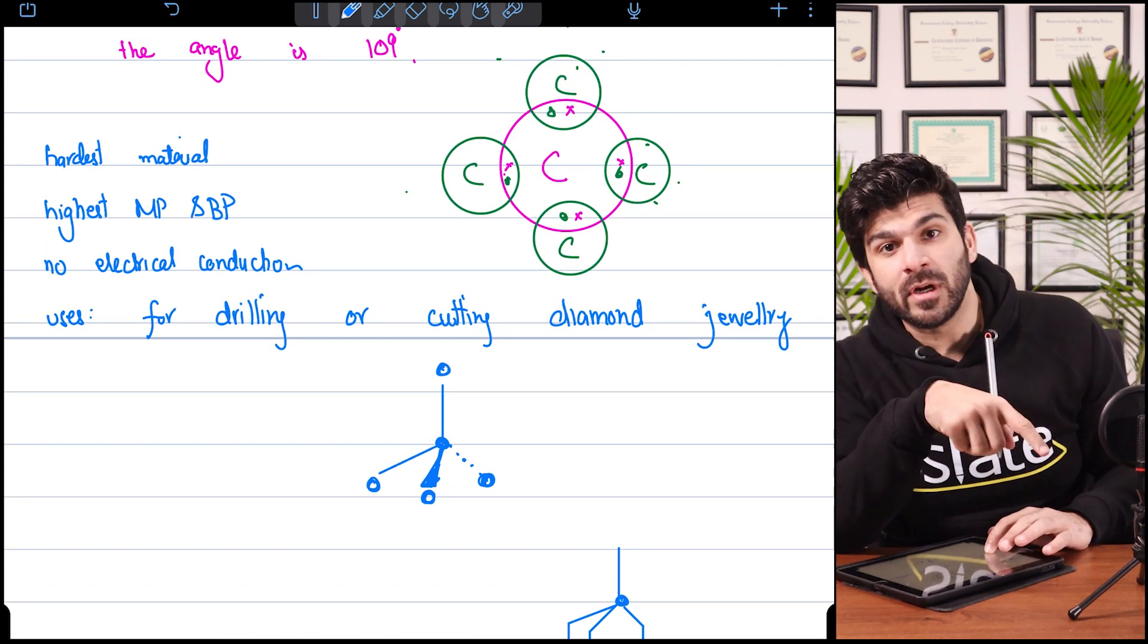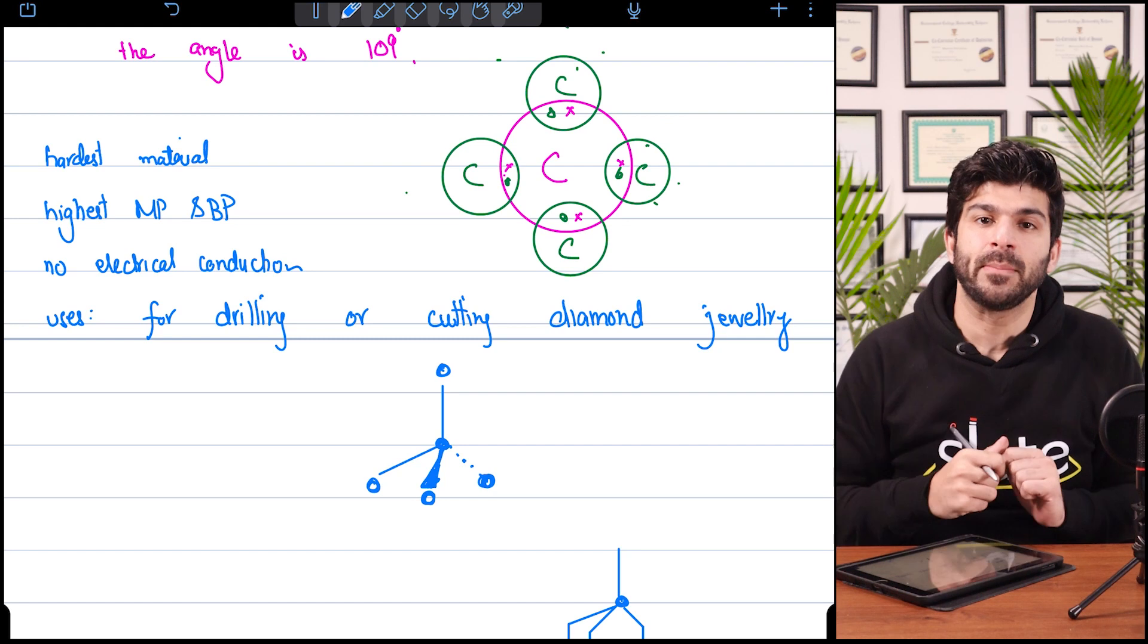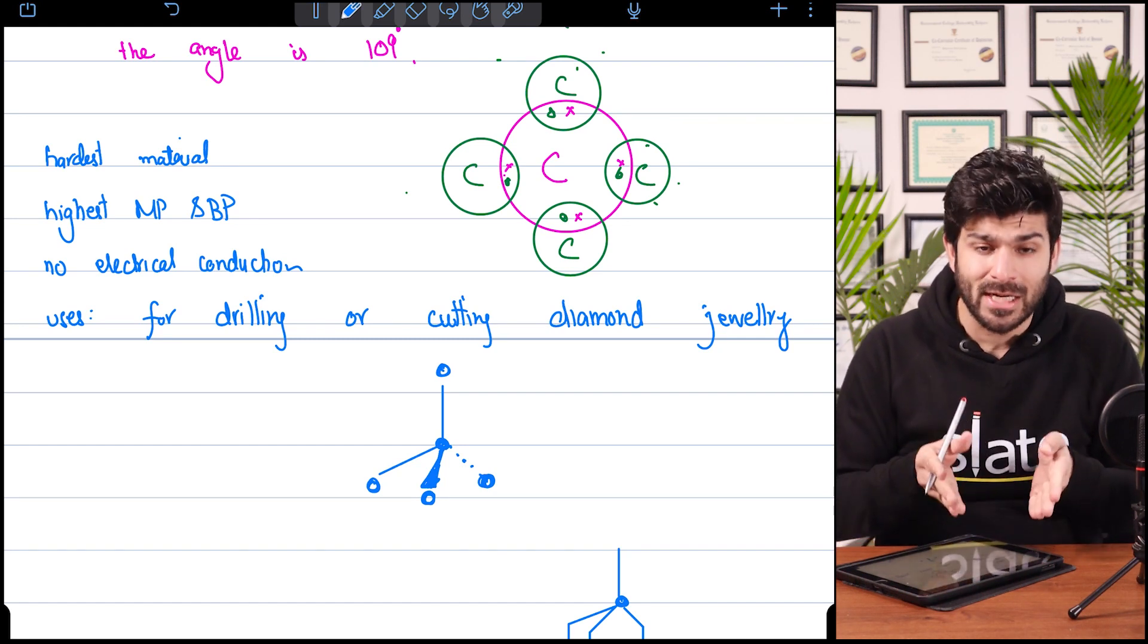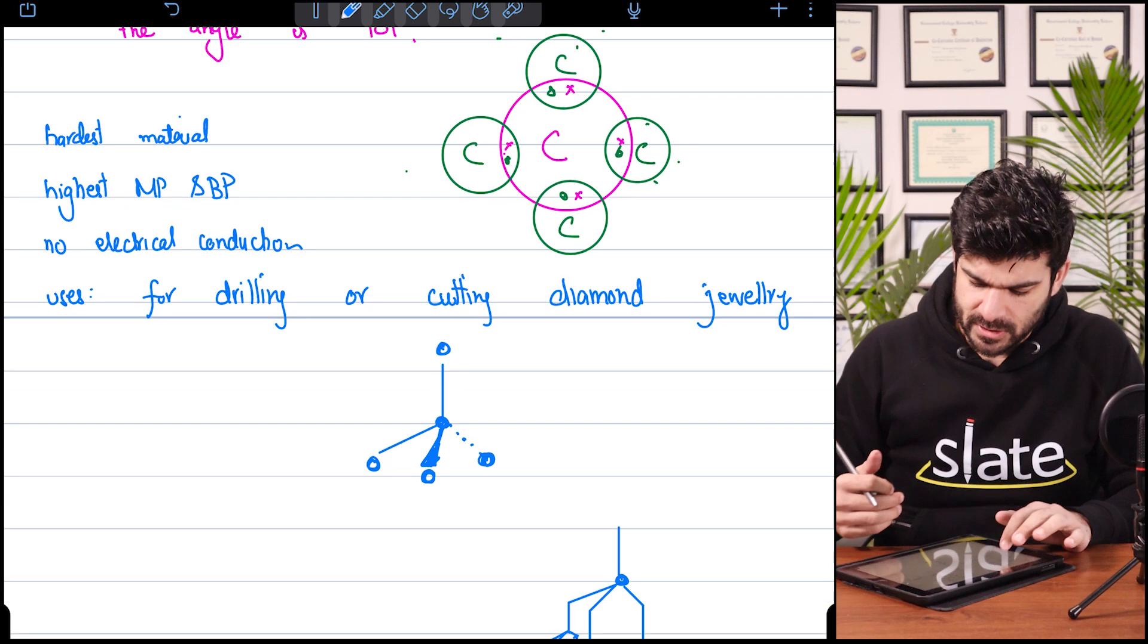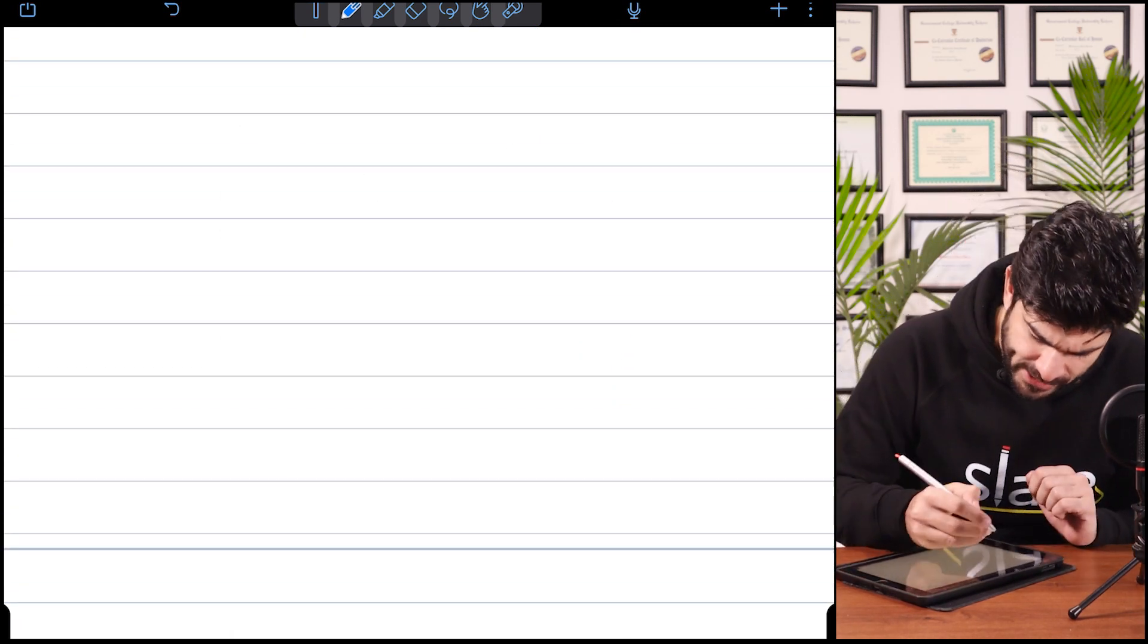Unlike simple covalent compounds, giant ones have high melting and boiling points. So it's the hardest material out there. That's the difference. Now graphite.